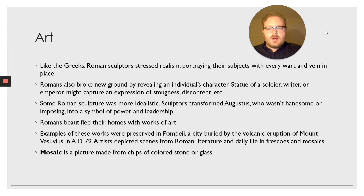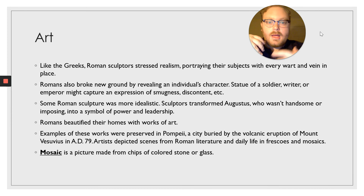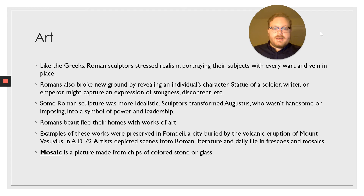Like the Greeks, Roman sculptors stressed realism, portraying their subjects with every wart and vein in place — very realistic statues that showed the imperfections of people. The Romans also broke new ground by revealing an individual's character in statues; a statue of a soldier, writer, or emperor might capture an expression of smugness or discontent. But some Roman sculptures were more idealistic — Augustus, for example, was made into a symbol of power and leadership in sculpture. Romans also beautified their homes with works of art.